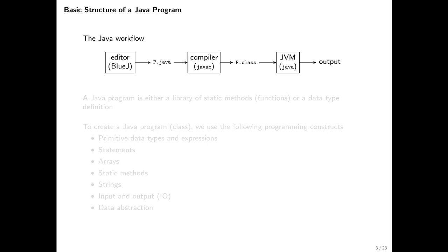When we write our Java programs, we are going to follow a particular workflow. We're going to write our Java programs using a simple editor called BlueJ. Java programs typically have a .java extension. So let's say we've used BlueJ to write a program called p.java. The next step is to compile it by invoking javac, the Java compiler. If p.java is error-free, the compiler produces a file called p.class. Then we run p.class by invoking the Java Virtual Machine, or JVM, which is a program called java. When we invoke java on p.class, we get the desired output.